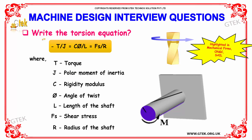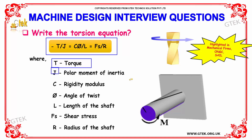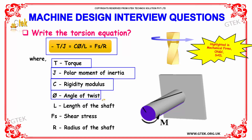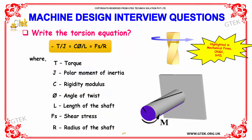Write the torsion equation. The torsion equation is: T/J = Cφ/L = Fs/R, where T is torque, J is the polar moment of inertia, C is the rigidity modulus, φ is the angle of twist, L is the length of the shaft, Fs is the shear stress, and R is the radius of the shaft.